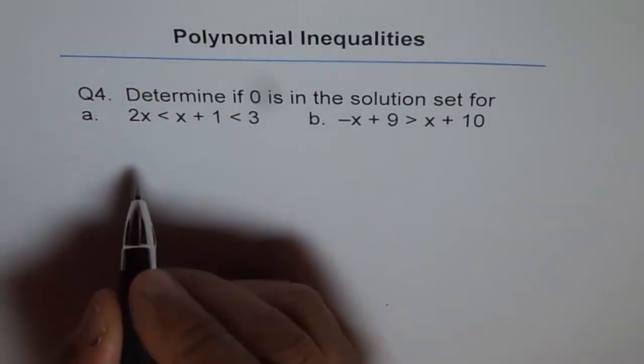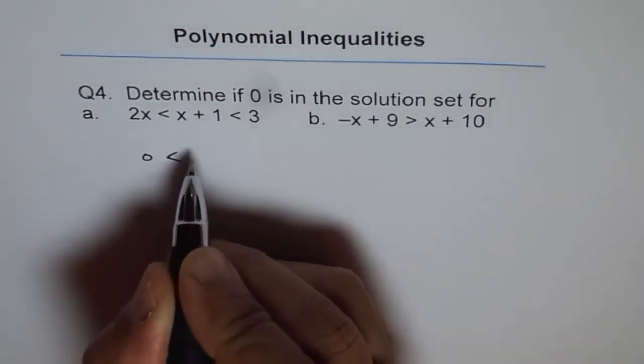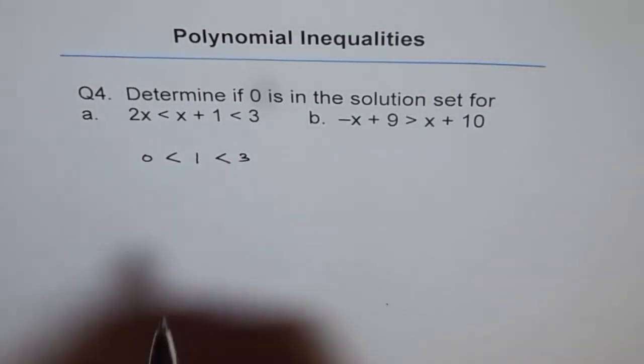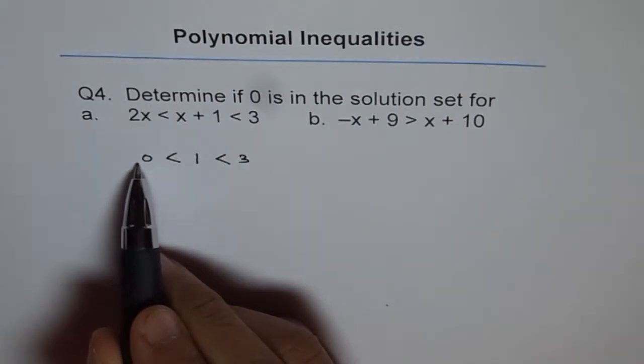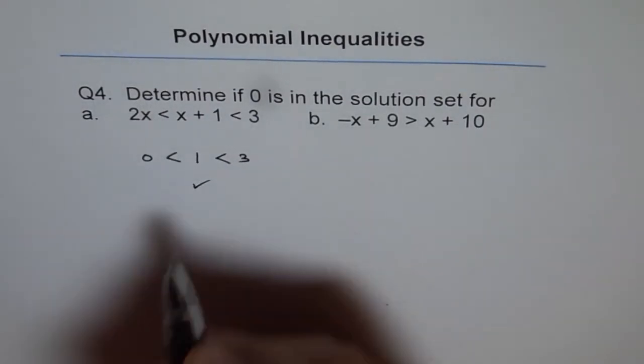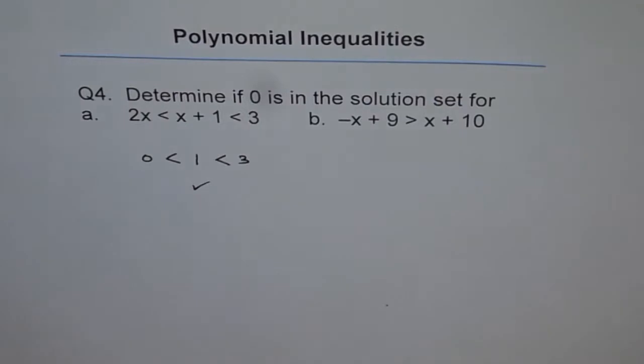If I plug in 0 here, I get 0 < 0 + 1, which is 1, < 3. 1 is greater than 0 and is less than 3, perfectly fine. So 0 is a solution for A.